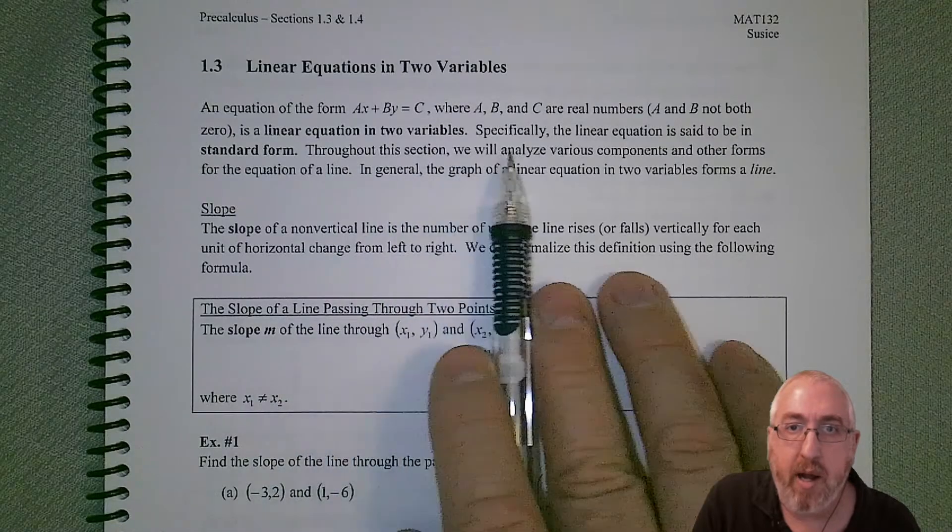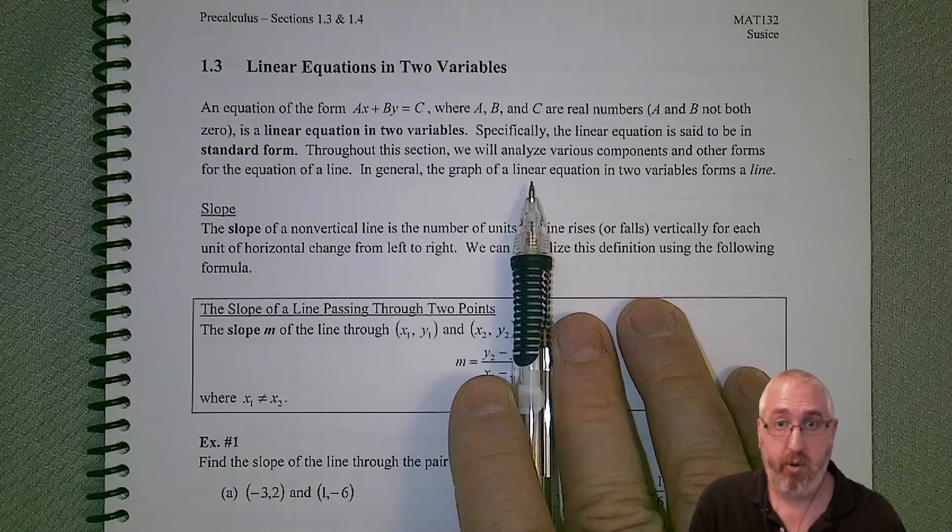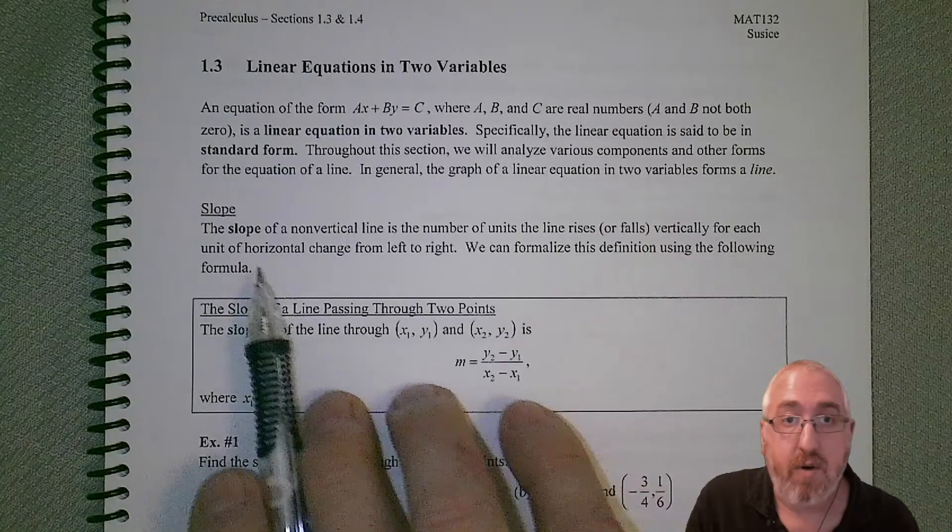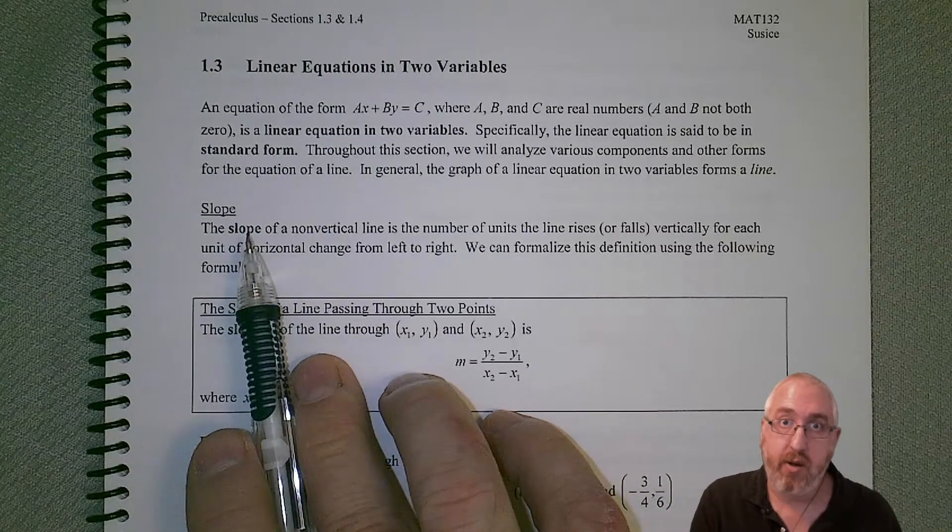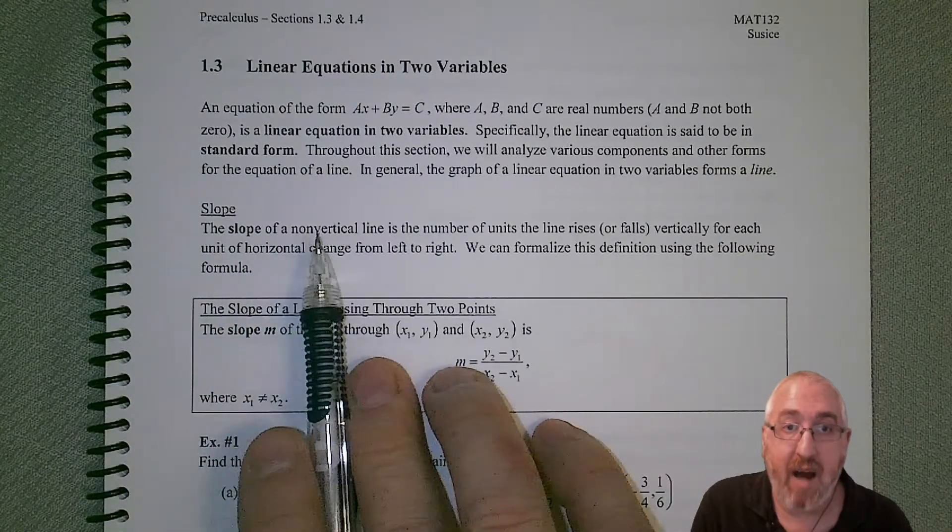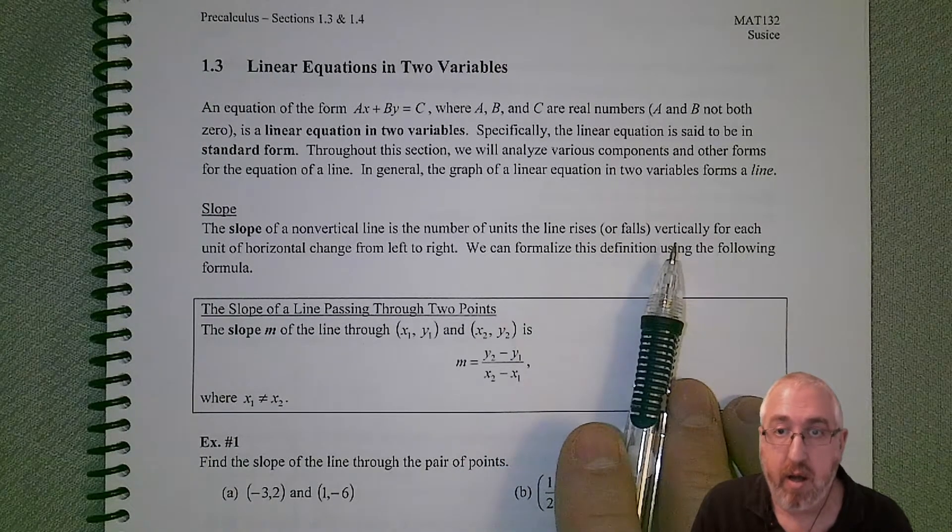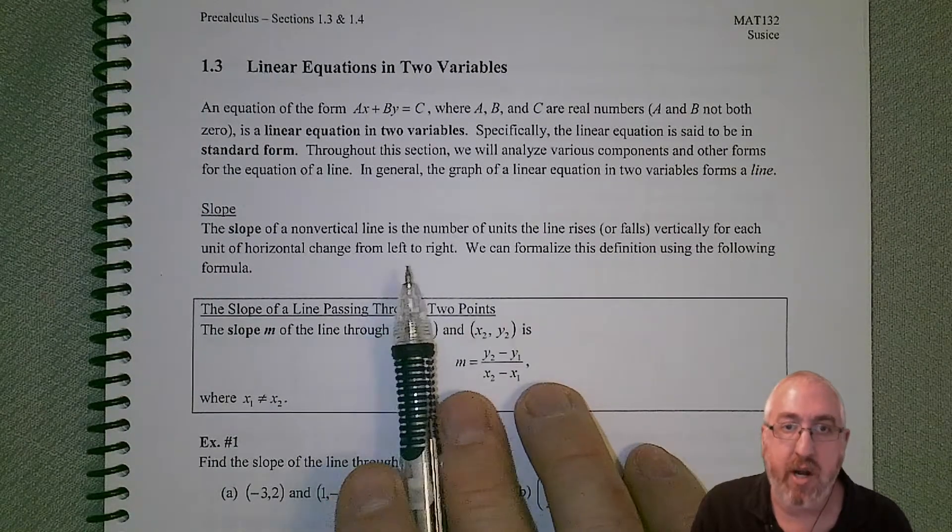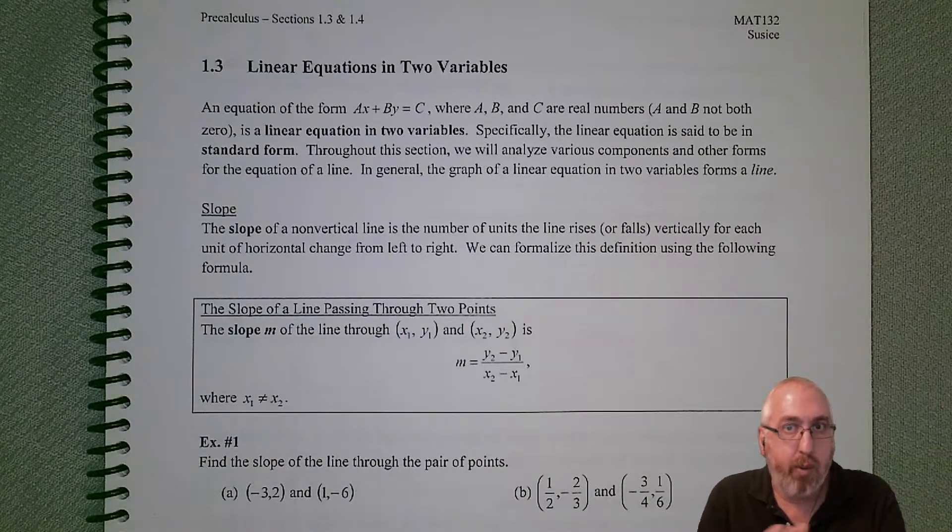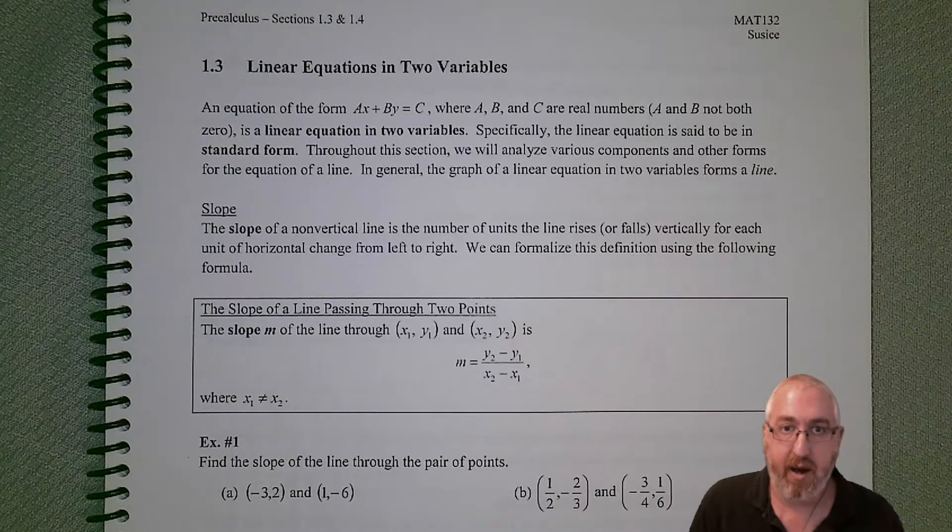Throughout this section, we will analyze various components and other forms for the equation of a line. In general, the graph of a linear equation of two variables forms a line. The first aspect of lines we'd like to know about is the slope. The slope of a non-vertical line is the number of units a line rises or falls vertically for each unit of horizontal change from left to right. We want to make sure we're going a specific direction when we analyze slopes, because if we go in opposite direction, that will change the value of our slope.